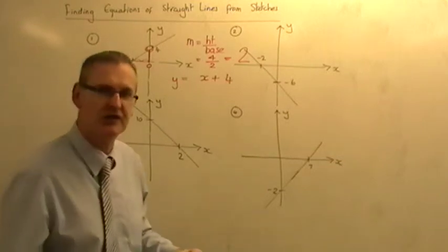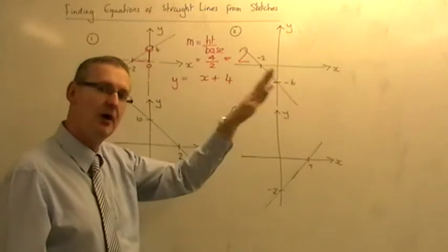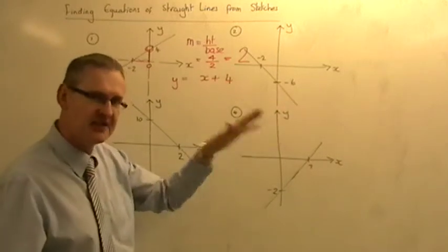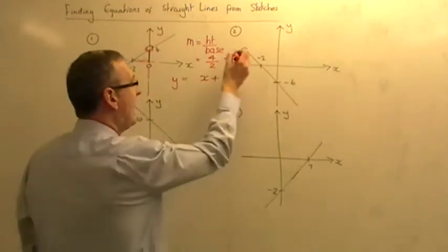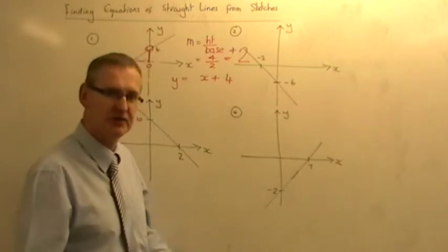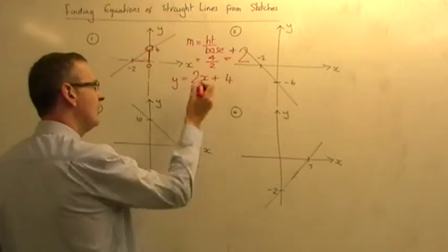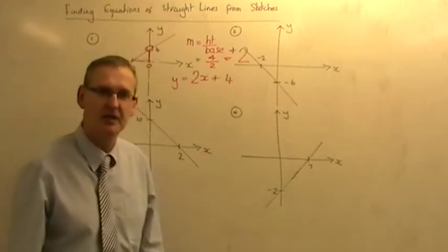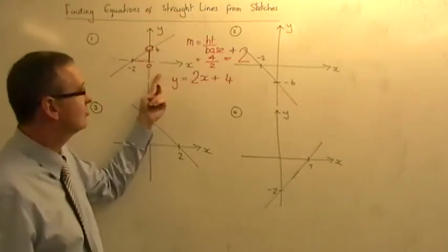You now say, which way does the slope go? The slope goes that way, so it's a positive slope. At this point, you now go to your 2, which is the slope value, and enter in the plus sign. So I know it's a positive 2 slope. So now you insert a positive 2 in front of the x. So it's y equals 2x plus 4, and that's the equation of that straight line.